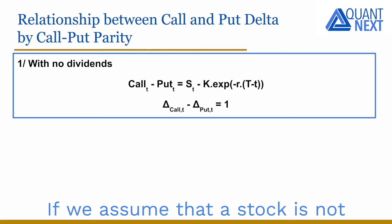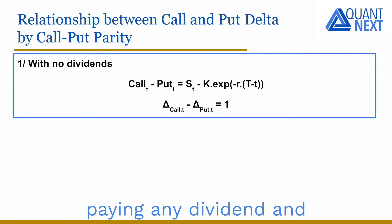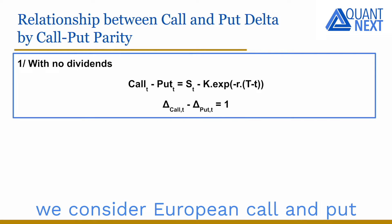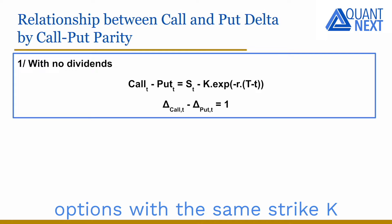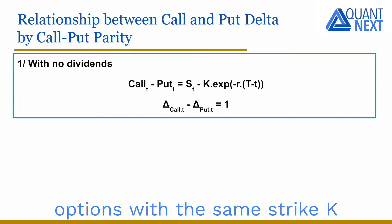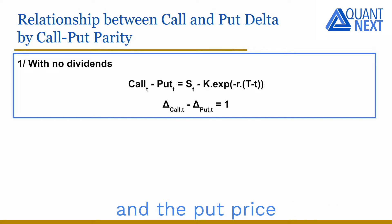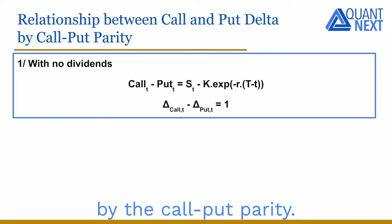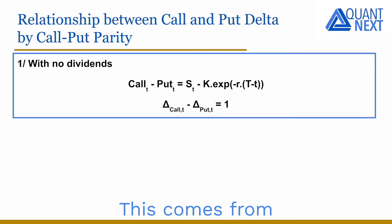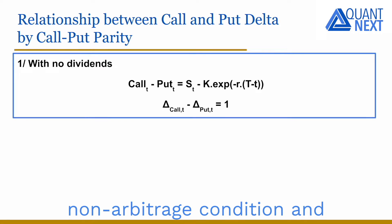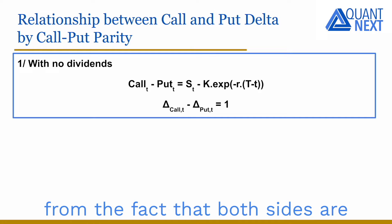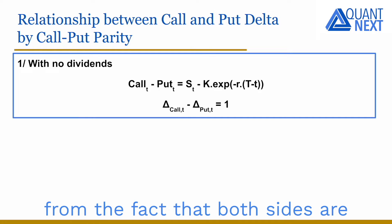If we assume that a stock is not paying any dividend and we consider European call and put options with the same strike K and maturity T, we have the following relationship between the call price and the put price by the call-put parity. This comes from non-arbitrage conditions and from the fact that both sides are equal to ST minus K at maturity.